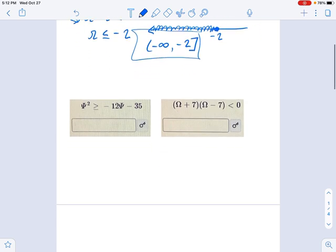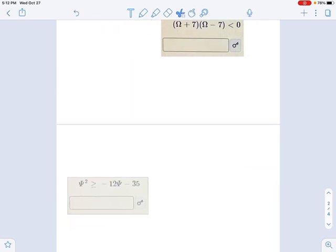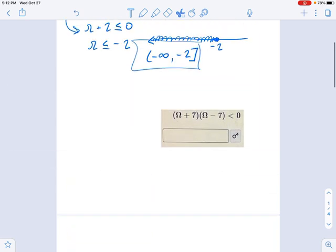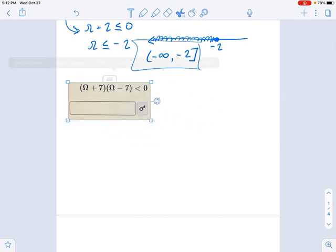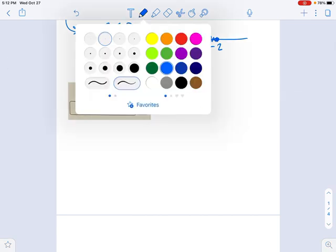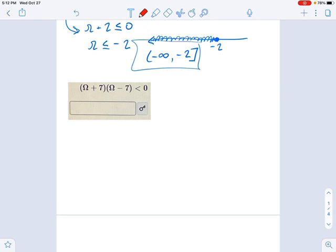Now where it's getting a little more complicated is you have this pair of factors multiplied together. If you actually try to figure out where this satisfies the condition shown here, where (x + 7)(x - 7) < 0, there's different ways we could do it. We could graph it, for example.